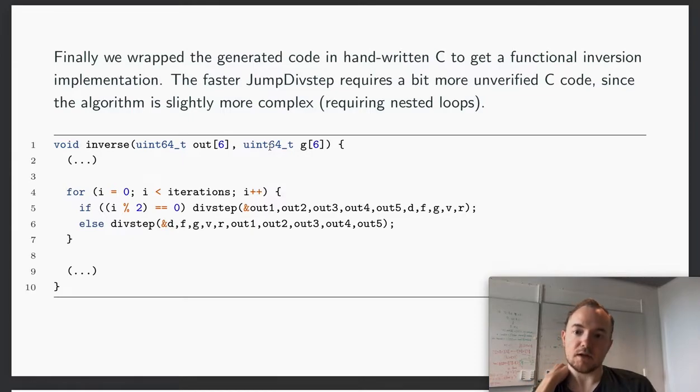As I mentioned, Fiat cannot generate these loops, so to make an actual inversion we had to write some lines of C around the generator. Here the division step is generated, but there's a couple of C lines both before and after the loop. Furthermore, there were two versions: one working at low precision, one working at high precision. The fast one which uses lower precision is a bit more complex and uses a nested loop, so there's a bit more unverified C code, but you get a big speed up using this version.